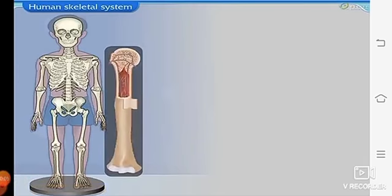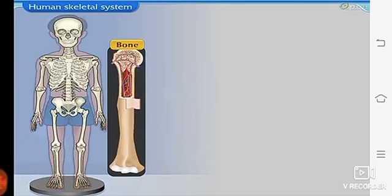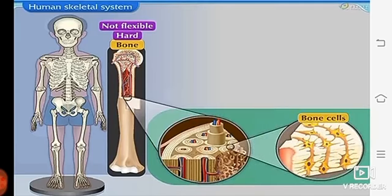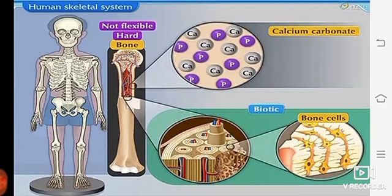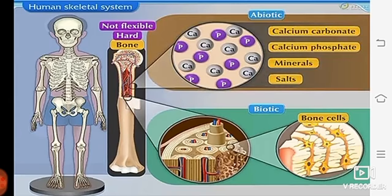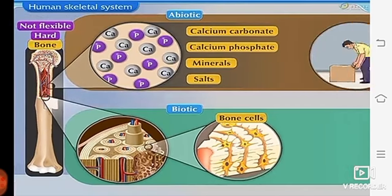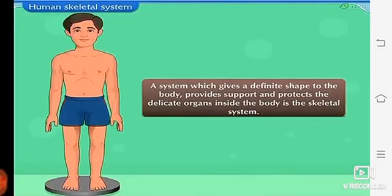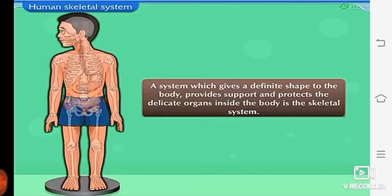All the bones of the body along with the cartilage together form the skeletal system. The structure of bone is complex. Bones are hard and not flexible. Bones are composed of two main constituents: bone cells, which are biotic, while calcium carbonate, calcium phosphate, minerals, and salts are abiotic constituents of bones. Calcium imparts strength to the bones. A system which gives a definite shape to the body, provides support, and protects the delicate organs inside the body is called the skeletal system.